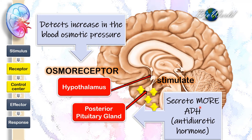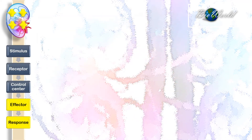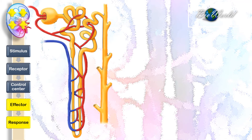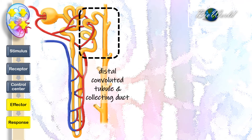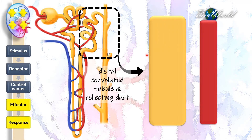Next, we look at the function of this hormone at the effector site. ADH will be transported by blood from the posterior pituitary gland to the kidney. The effector is inside the kidney in the form of the nephron. ADH will specifically bind to cells located at the distal convoluted tubules and the collecting duct. I will use a green rectangle to represent the distal convoluted tubules and collecting duct, while the red rectangle represents the peritubular capillaries.